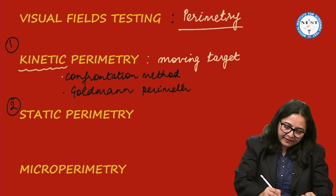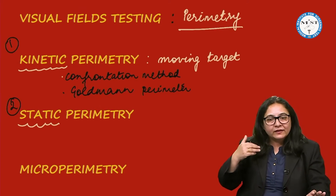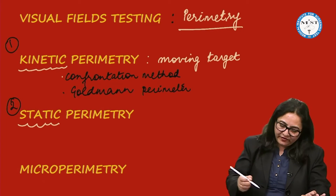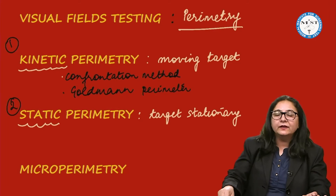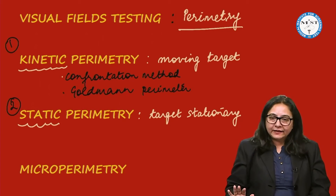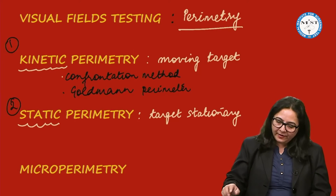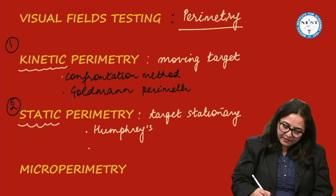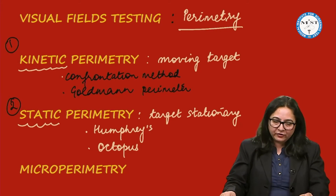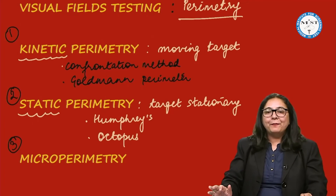In static perimetry, the target is stationary. What is varied is the brightness and size of the target. The target is fixed in position, and you vary the size or brightness to judge whether a brighter or smaller target is visible at a particular spot of the visual field. Two examples of static perimeters are the Humphrey's Field Analyzer (HFA) and the Octopus perimeter.